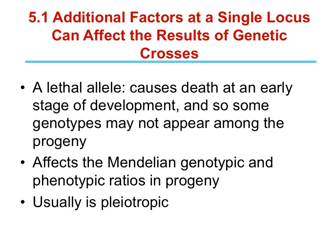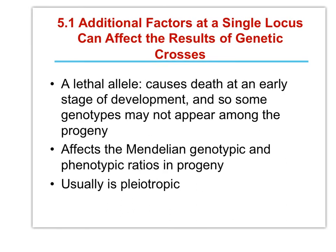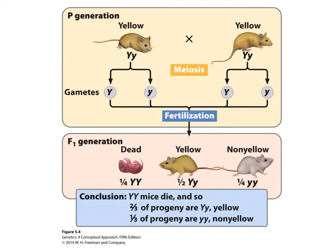A recessive lethal allele. So what does recessive mean here? It's recessive for lethality — that means death is only going to happen in the recessive homozygote. Little r, little r equals death. That's a phenotype. Let's give ourselves an example with coat color.